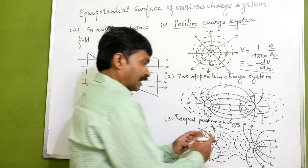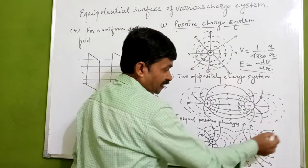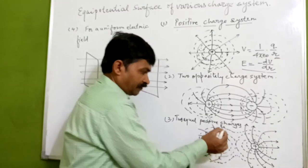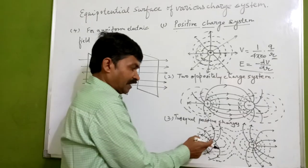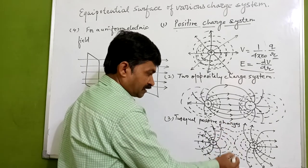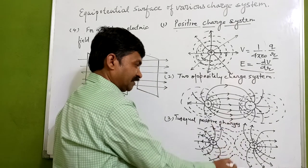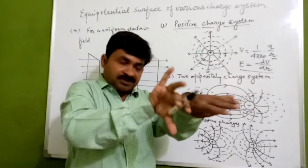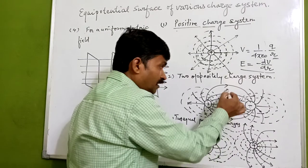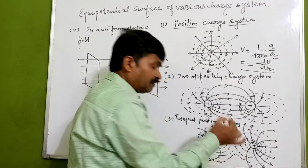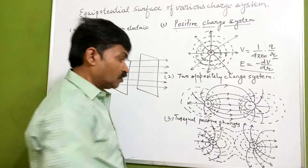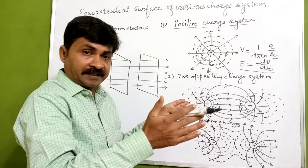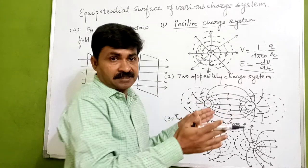For two equally positive charges, the electric field lines come out in all directions from both charges. Between the charges there is repulsion, and you can see there is a weaker electric field in that region. Because of the weaker field, the equipotential surfaces are further separated — they have more distance between them.